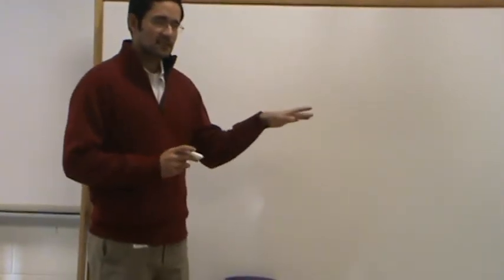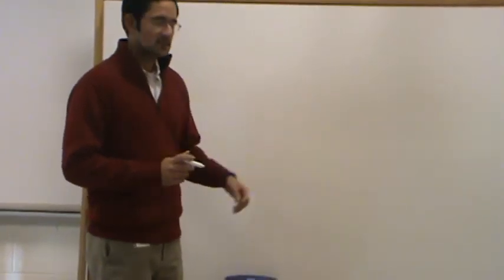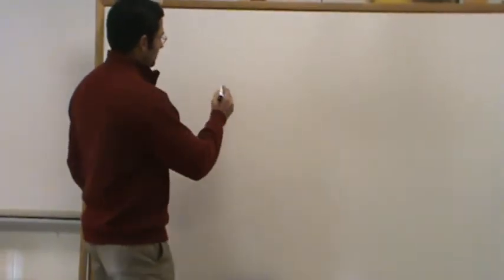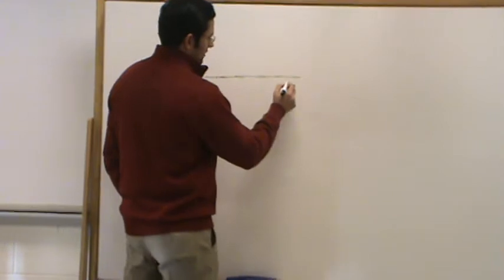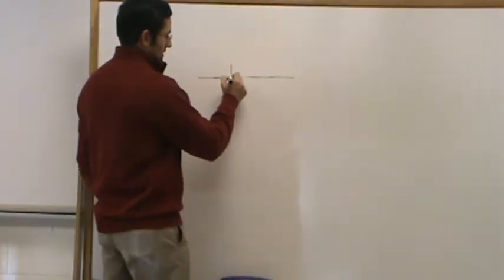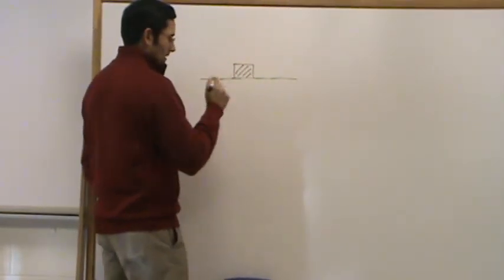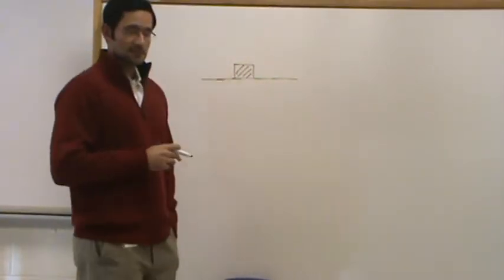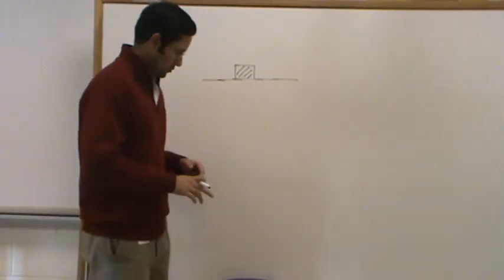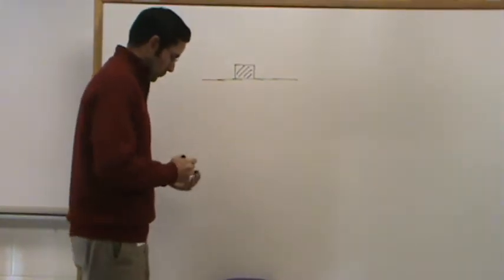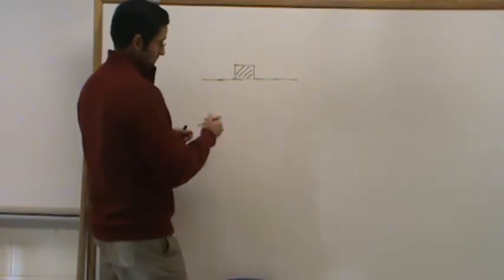We're going to start off with a flat surface and then upgrade to an inclined surface. On a flat surface, whenever you're given any object — whether it's a car, motorcycle, box, sphere, or ball — the first thing you should always draw is the force of gravity.